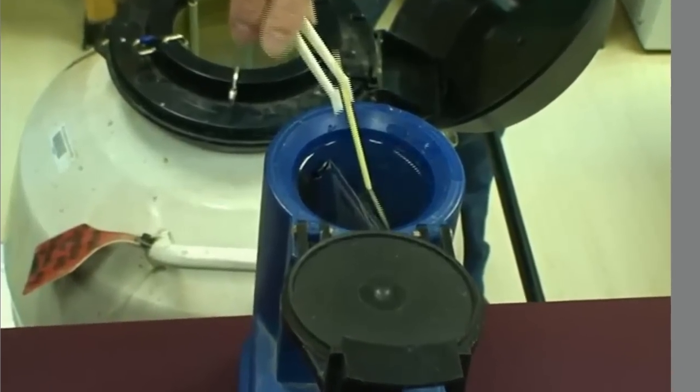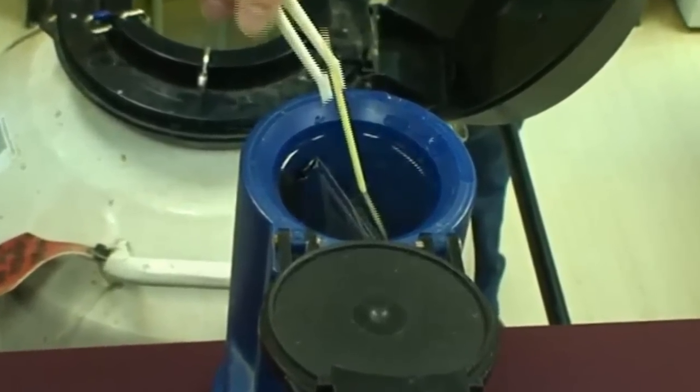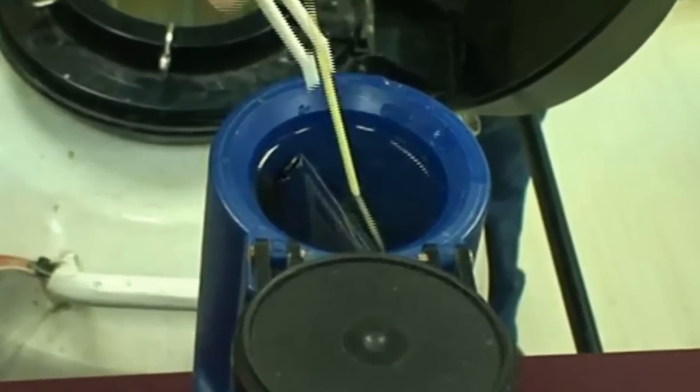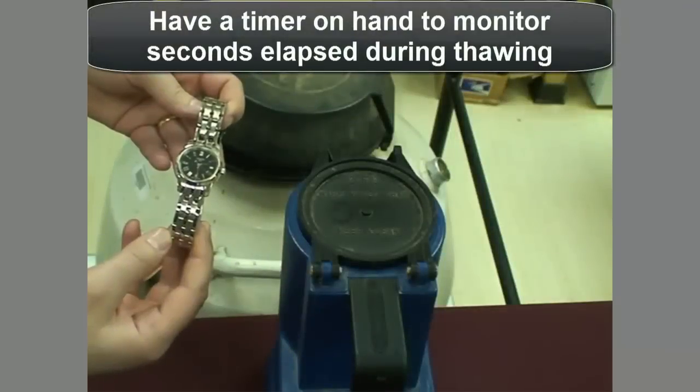The National Association of Animal Breeders recommends thawing semen in 90 to 95 degree Fahrenheit water for at least 40 seconds. Time the thaw with a watch or timer instead of guessing the time elapsed.